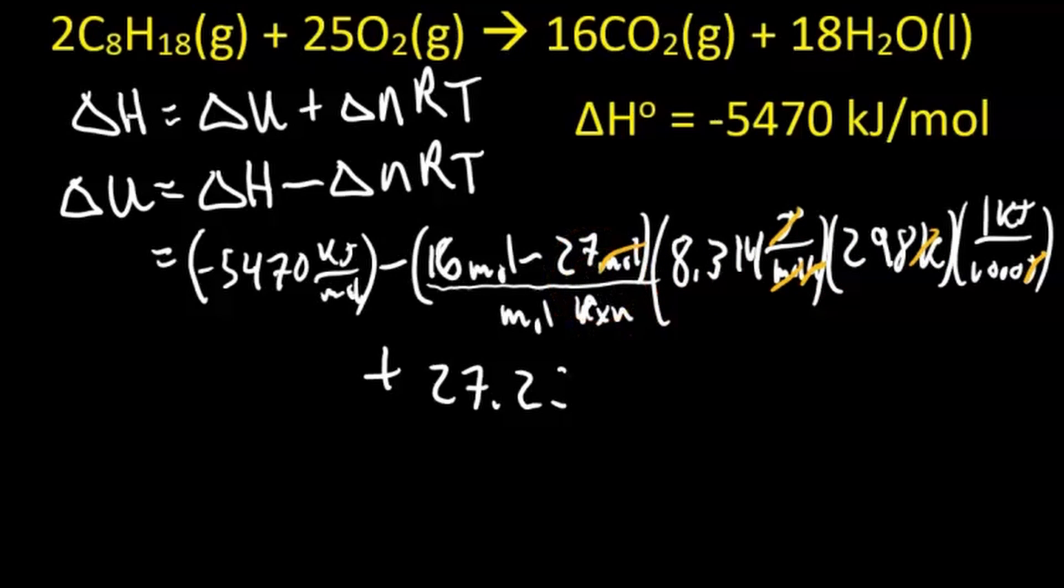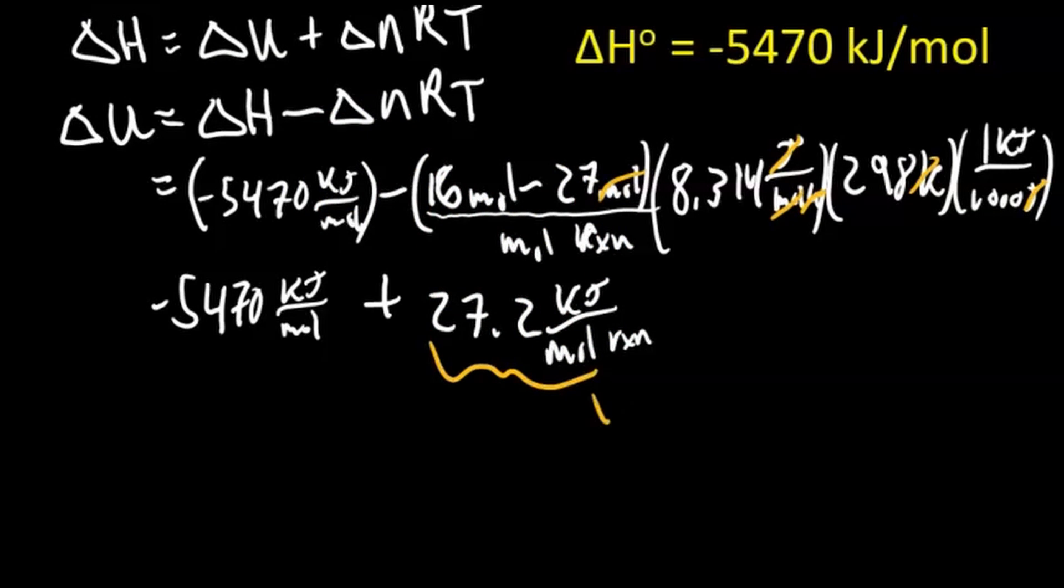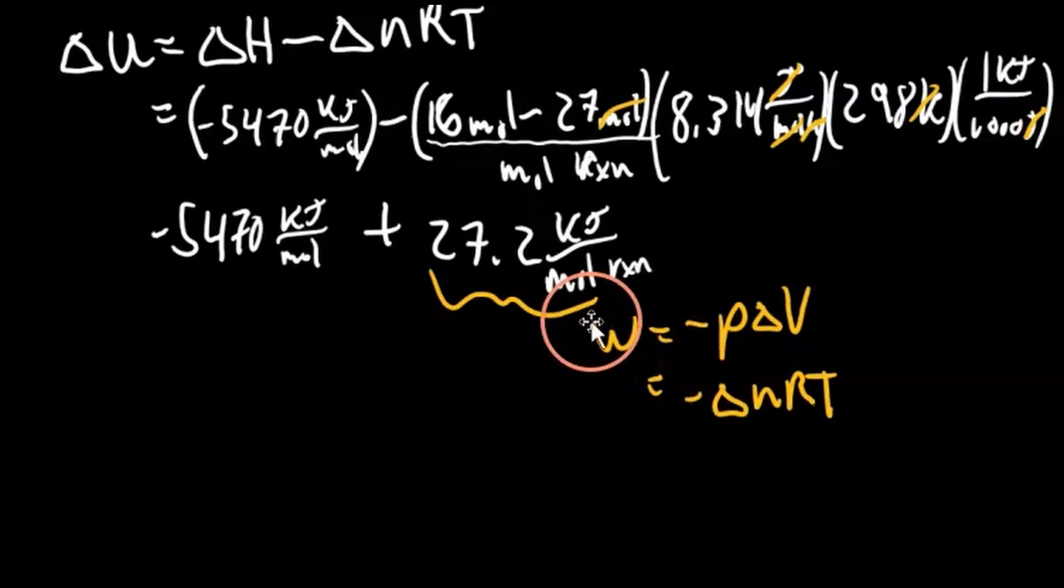In terms of our units, these moles cancel out with these moles, we have joules cancel out with joules, and Kelvin cancels out with Kelvin, so we're left with kilojoules per mole. That's kilojoules per mole of the reaction, that's super important. This is the work done, so this here, this is the work performed by the reaction. Work equals negative P delta V for a constant pressure process, if there's no other work, just pressure volume work, this is equal to negative NRT. So this truly is the work done per mole of the reaction.